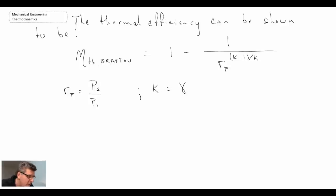And again k is the ratio of specific heat. Sometimes it is gamma, although we're not using it in this version of the course. Usually in gas dynamics they use gamma. And so Rp is the pressure ratio. So that is the thermal efficiency for the Brayton.